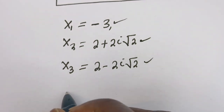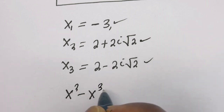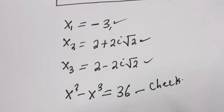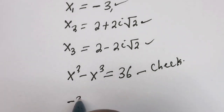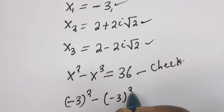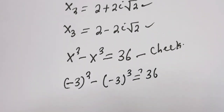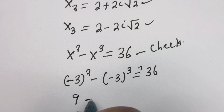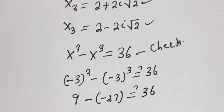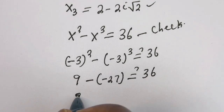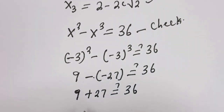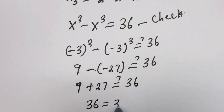We can check to confirm if our answer is right. The given equation is s squared minus s to the power of 3 is equal to 36. Let's check when s equals minus 3: minus 3 squared minus minus 3 to the power of 3 must equal 36. Minus 3 squared is 9, minus bracket minus 27 is plus 27. So 9 plus 27 equals 36, which is true.